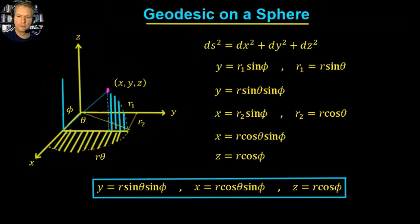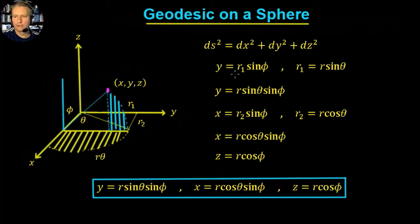So this distance y upon r1 will equal the sine of the angle phi — you can see that because phi there, going down and back up, so that angle's phi. That's going to be r1 sine phi. Finally, putting r1 in, you get y equals r sine theta sine phi. So that gives us our y distance.